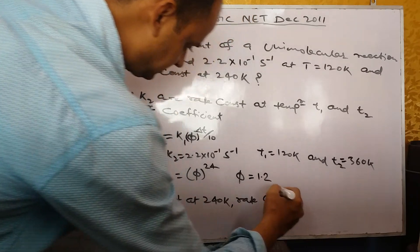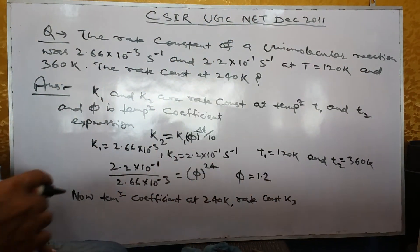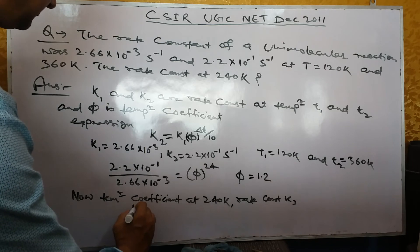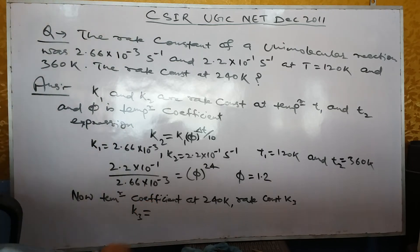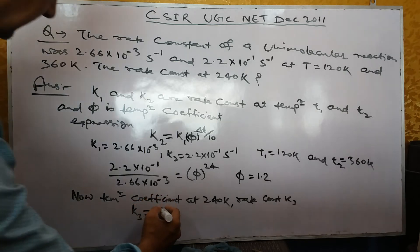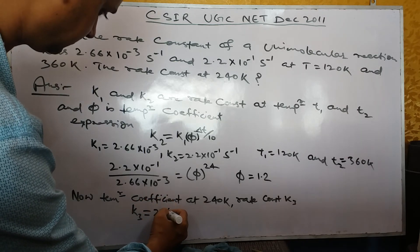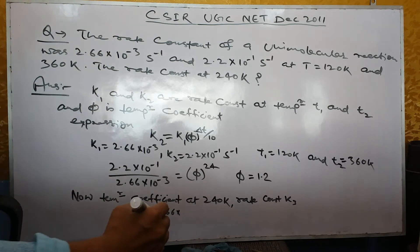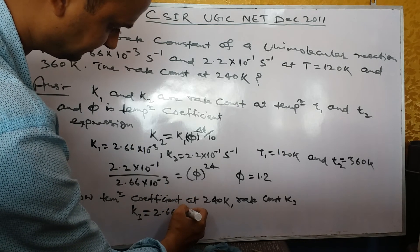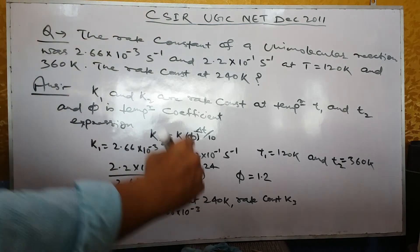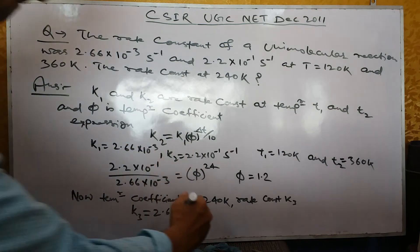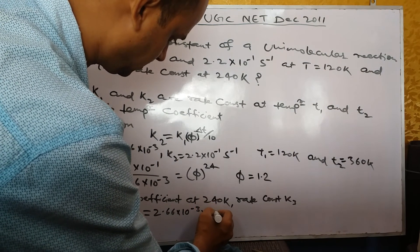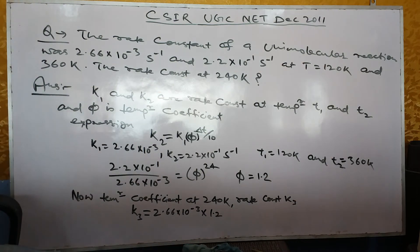K3 is equal to 2.66 × 10^-3 multiplied by 1.2 to the power 12.